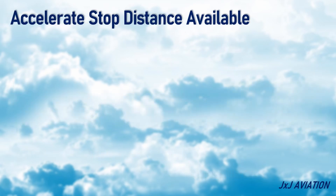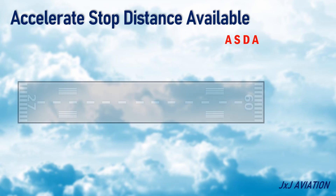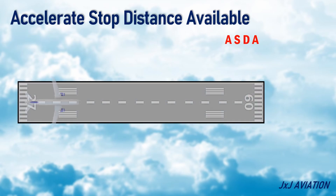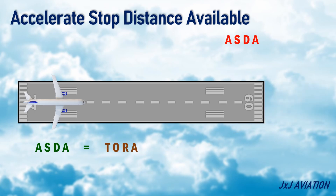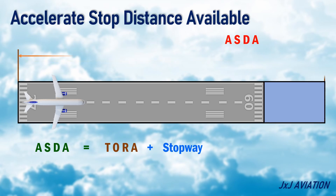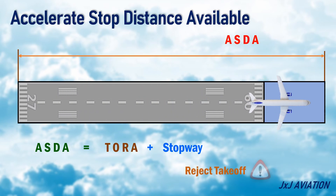Accelerate stop distance available, ASDA: this is the sum of takeoff run available and the stopway, if available. If there is no stopway, the accelerate stop distance available is the same as the takeoff run available. This distance is applicable in case of a reject takeoff of an aircraft.